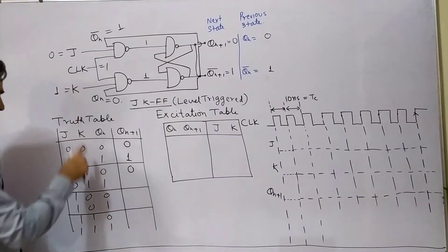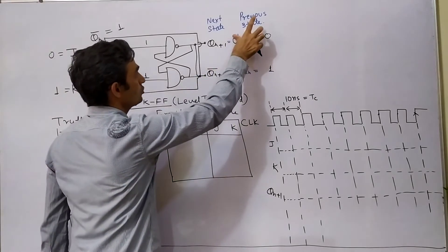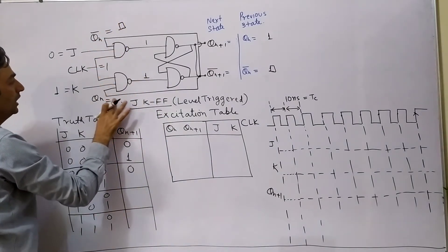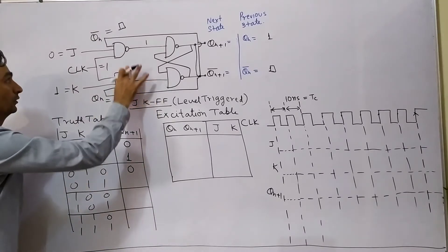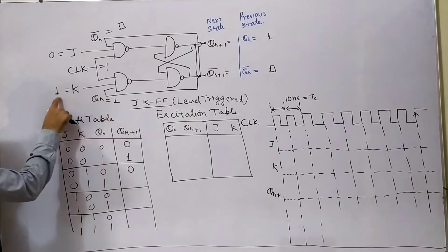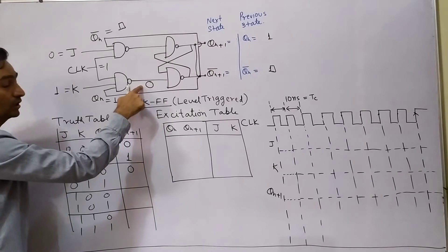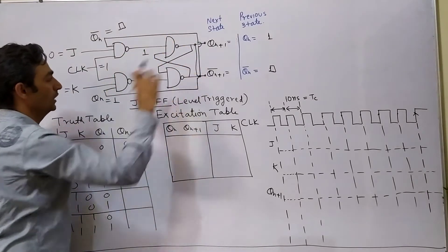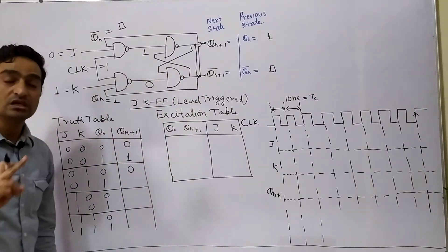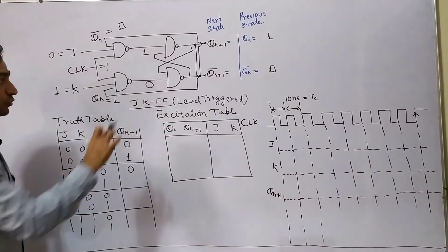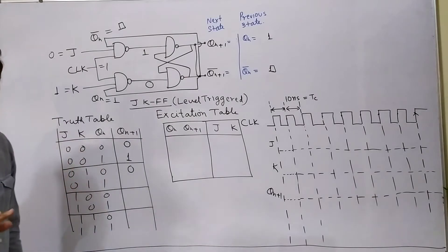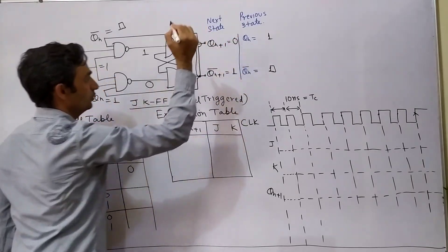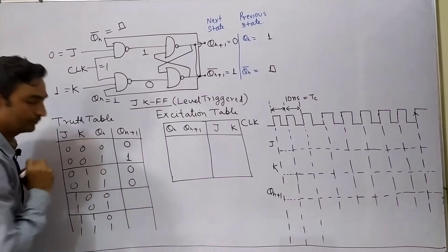Second sub-case: J=0, K=1, QN=1. If QN goes to 1, then QN bar will go to 0. Now we have 1, 1, 1 on the upper side — this will be 0. This is the first time we are encountering 0 here. Any input 0 means this will be 1. The leg carrying 0 will be processed first, because NAND is activated by 0. So if this is 0, this will be 1, and if this is 1, this will be 0. Next state output will be 0.